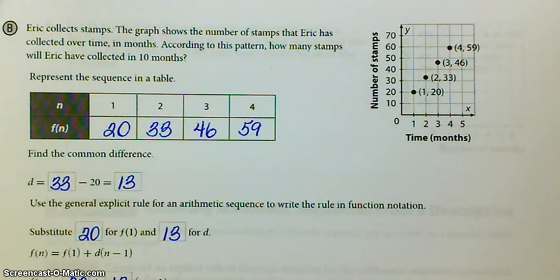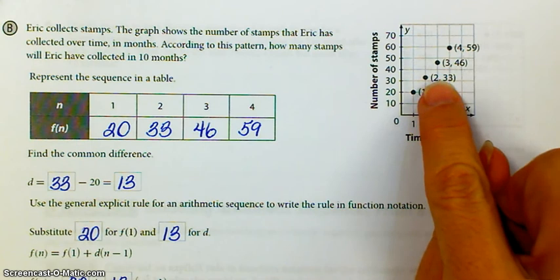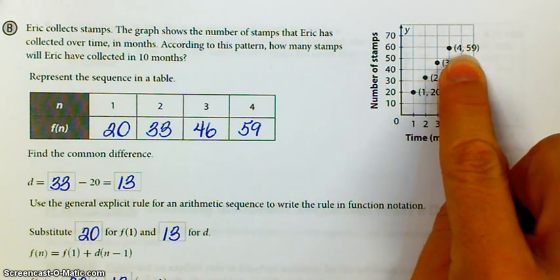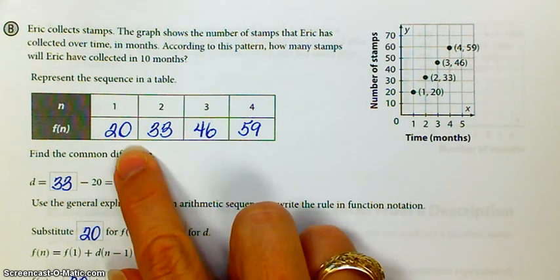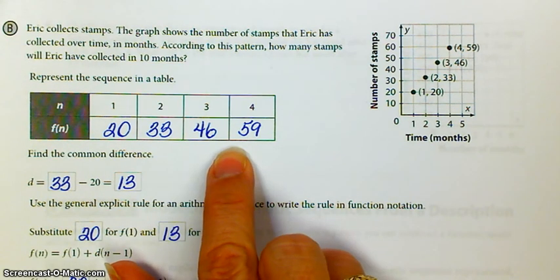Here's another example on page 174. Eric collects stamps. The graph shows the number of stamps that Eric has collected over time in months. According to this pattern, how many stamps will Eric have collected in 10 months? So you can take the points from the graph and construct a table from them. And then look at the table. Notice what the common difference is. In this case, the common difference is 13.